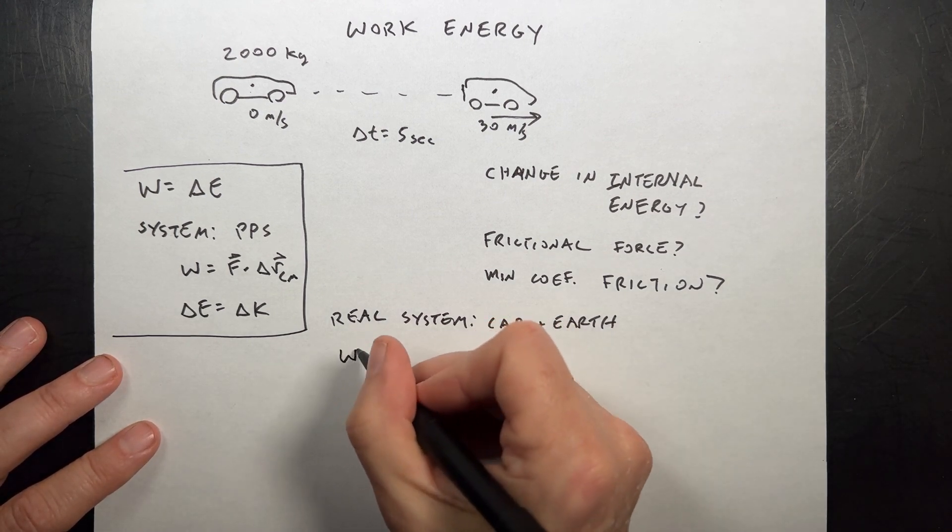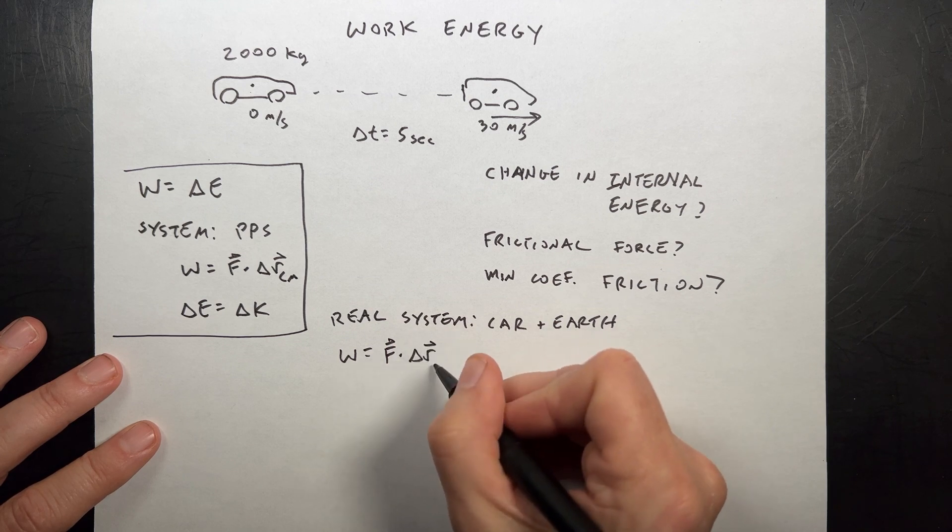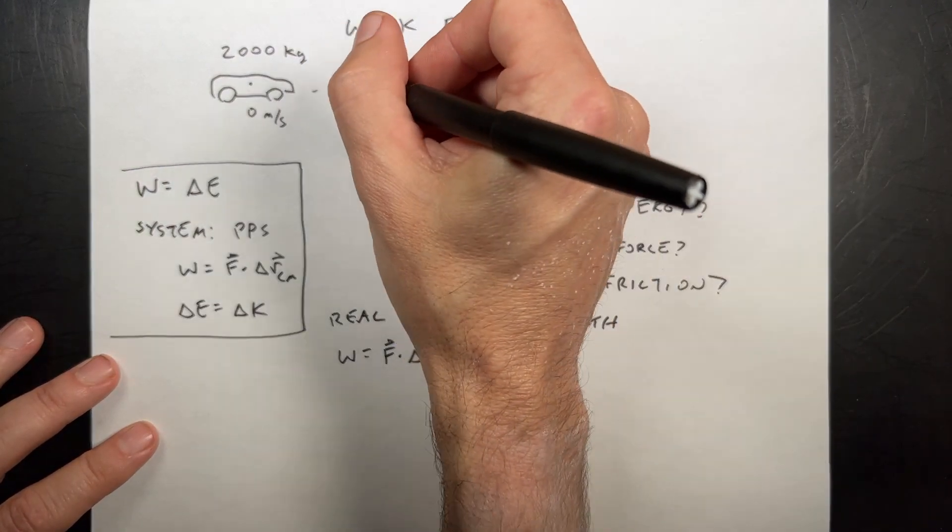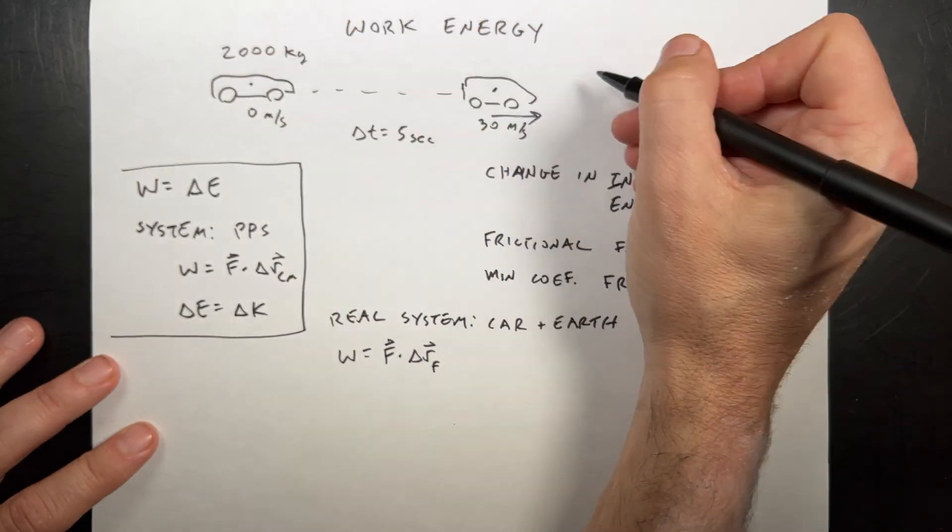In the real system, we calculate work as F dot delta R F. How far did the force move? So in this case, we still want to draw the forces on the diagram. I'm going to draw it as a dot. No, I'm going to draw it right here. Let's draw it.